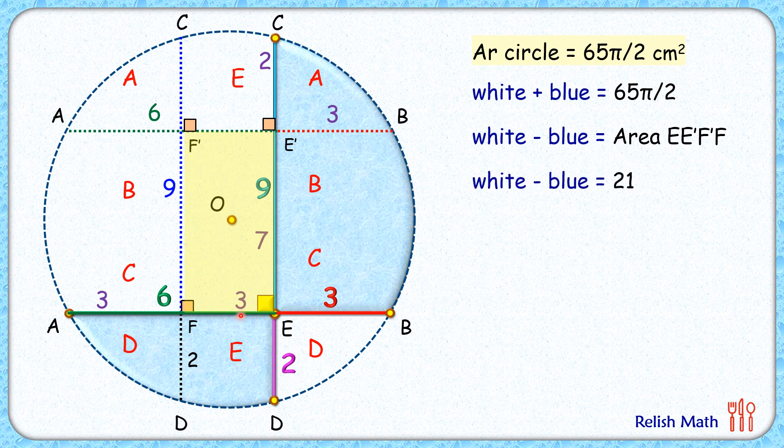Now if we subtract these two equations, the white region will get cancelled and we'll have 2 times the blue region, which is nothing but 65π/2 - 21. So taking 2 to the other side, we get the blue region as 65π/4 - 21/2.